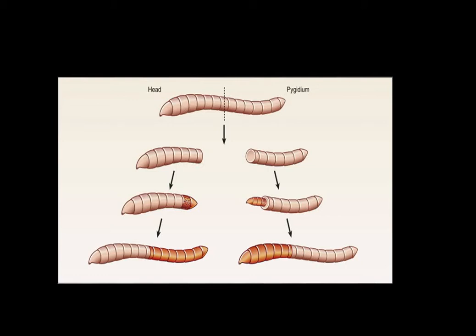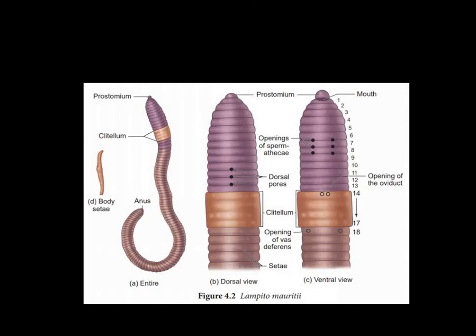The head region, which we term the prostomium, shows development in the posterior part. At the same time, the NS-containing pygidium shows growth in the anterior direction and two earthworms are formed. The color differentiation, where the darker color shows the regenerated part of the earthworm, can be clearly observed. The earthworm belongs to class Oligochaeta and phylum Annelida, shows metameric segmentation, and this segmentation is true segmentation.